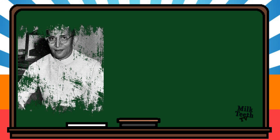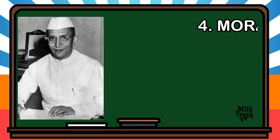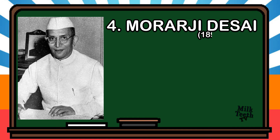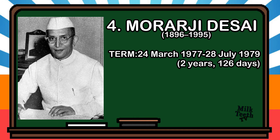The fourth Prime Minister of India was Morarji Desai. He was born in 1896. His term lasted for two years and 126 days, beginning on 24th March 1977 until 28th July 1979. Party: Janata Party.